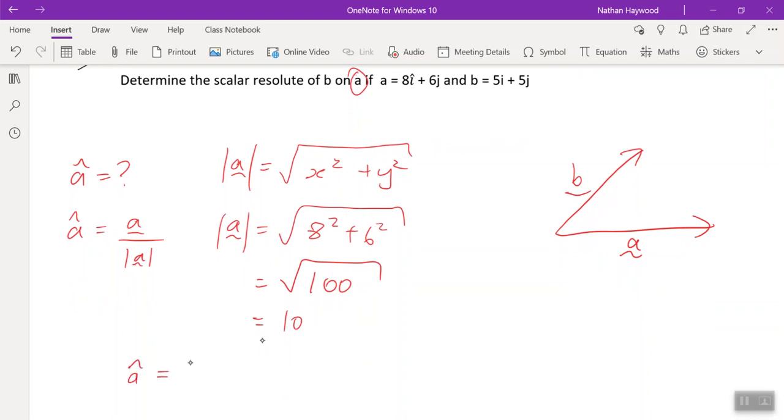So we're going to do 8i plus 6j divided by the magnitude over 5j. Okay, split it up into fractions, and then divide by 2 on top and bottom. So that's the unit vector of A.